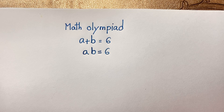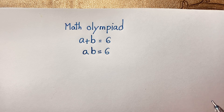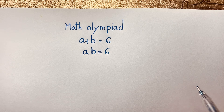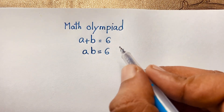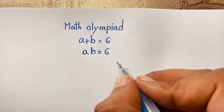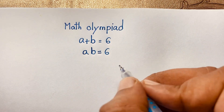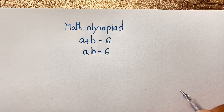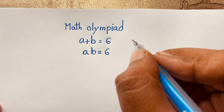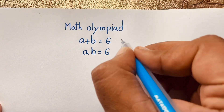Hello everyone. In this video, we have solved a nice math Olympiad question. This question is: A plus B is equal to 6, and A times B is equal to 6. We will find out the values of A and B in this math problem.